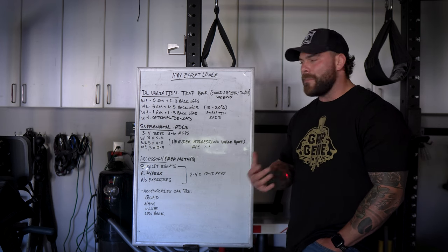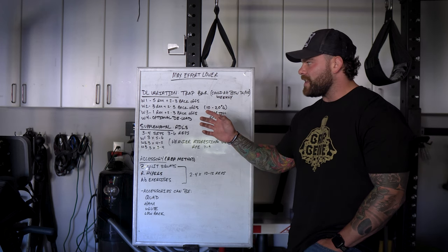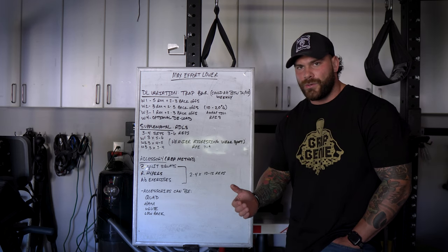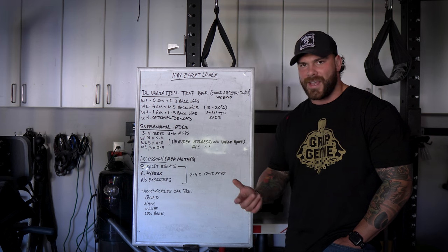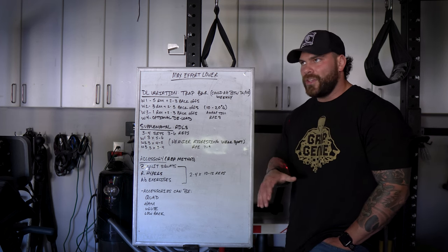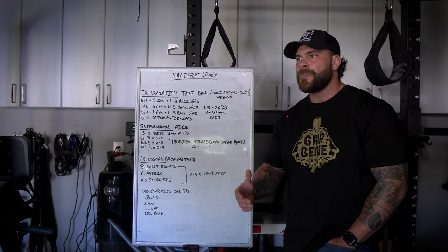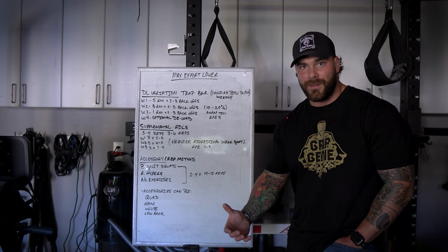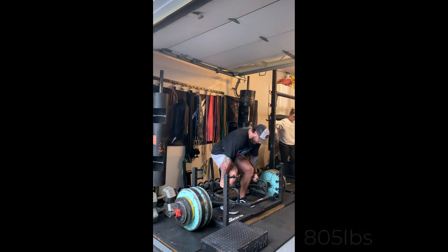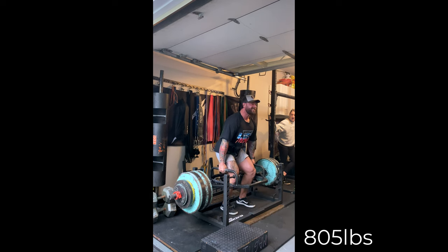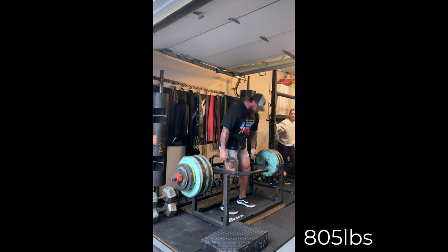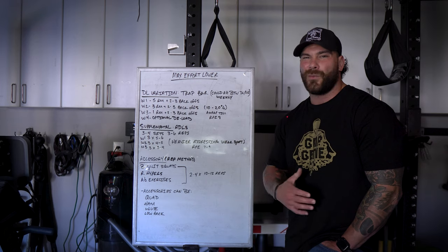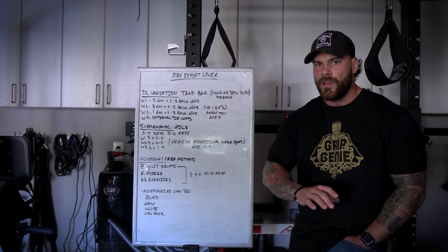For max effort lower, I'm starting with some sort of deadlift variation. On max effort days, they typically recommend you do a variation of your competition lift. Since I'm not doing powerlifting with squat, bench, and dead — I'm doing strongman — I'm gearing this to increase my conventional deadlift as well as the deadlift I'll likely see in competition, which is more likely to be a frame deadlift. So for my variation I'm doing the trap bar deadlift. I don't care too much about my squat at the moment since we're not doing squats in strongman, so I'm sticking with the trap bar throughout this entire wave.